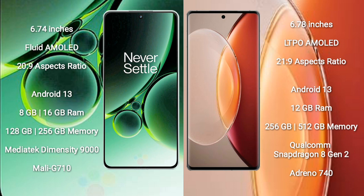OnePlus Nord 3 runs on the Android 13 operating system. It comes with 8GB or 16GB RAM and 128GB or 256GB internal storage, powered by a MediaTek Dimensity 9000 processor with a Mali-G710 GPU.